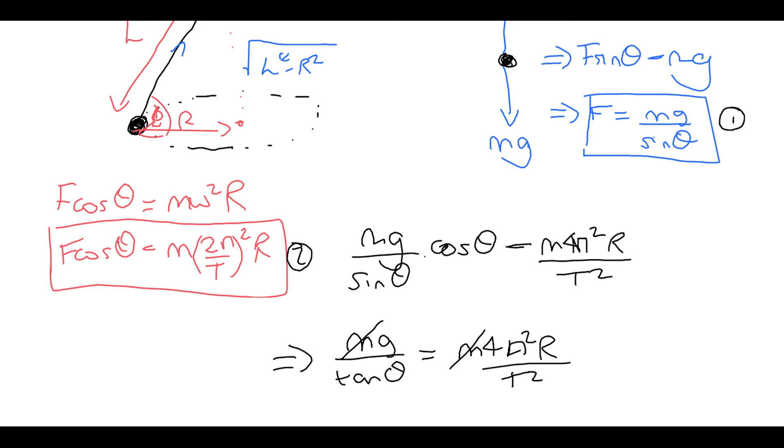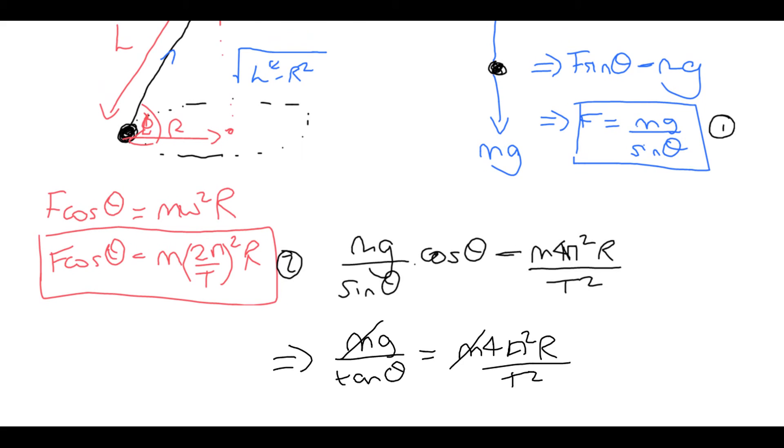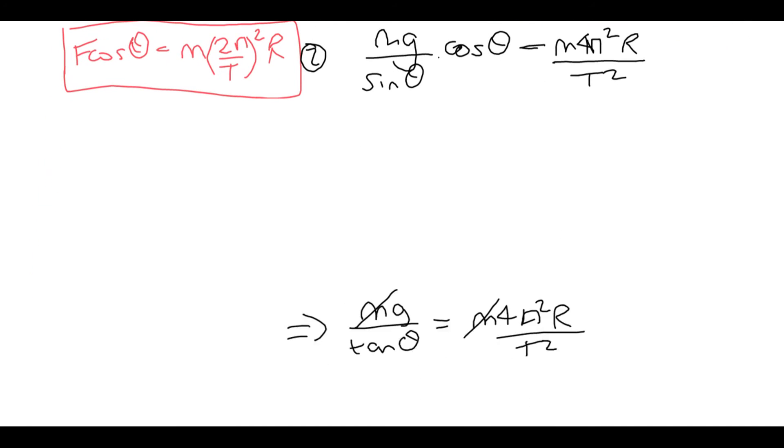So we can see here we can cancel out the m's. And what we're going to do is we're going to substitute in for tan theta. So tan theta is opposite over adjacent, so it's going to be the opposite divided by the adjacent like here. Let's give ourselves lots of space.